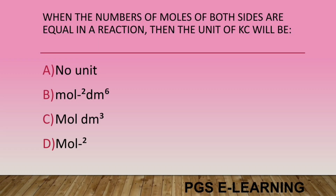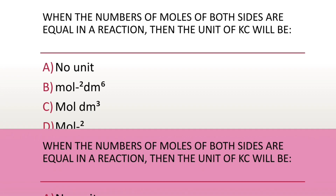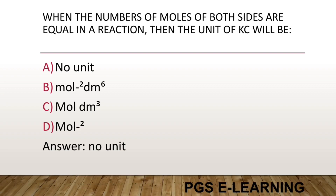When the number of moles on both sides are equal in a reaction, then the unit of Kc will be: Option A, no unit. Option B, per mole square decimeter power 6. Option C, mole per decimeter cube. Option D, per mole square. Correct answer is no unit.